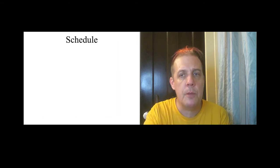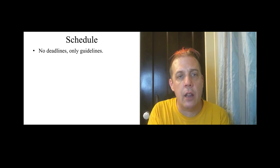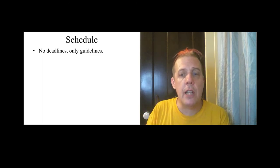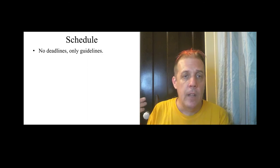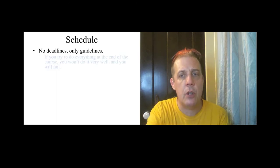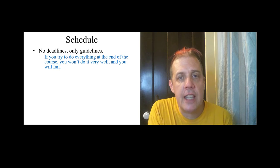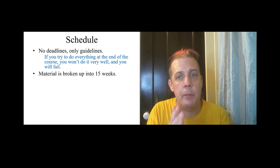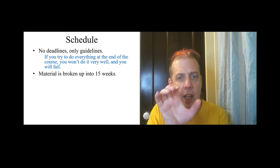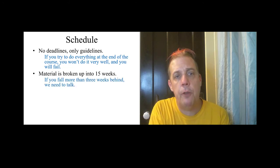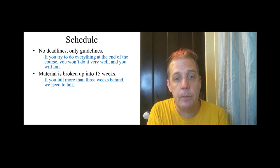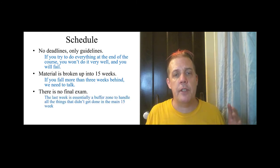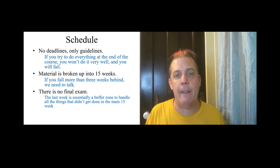Schedule for the course. First thing I want to emphasize is that there are no deadlines, there are only guidelines. So I've entered deadlines for everything in Canvas, but there's not actually a penalty for going past those. That's just a rough sense of where you should be as you go along. Now, if you try to do everything at the end of the course, you won't do it very well and you will fail. The material has been broken up into 15 weeks, so there's reading and exercises for week one, week two, week three, etc. If you fall more than two or three weeks behind, we need to talk. There is no final exam. In place of final exam week, we just have this buffer zone that is meant to handle all the things that didn't get done in the main 15 week sequence.